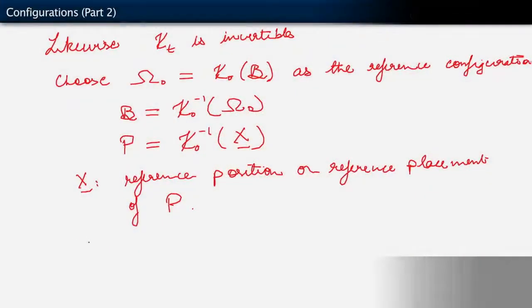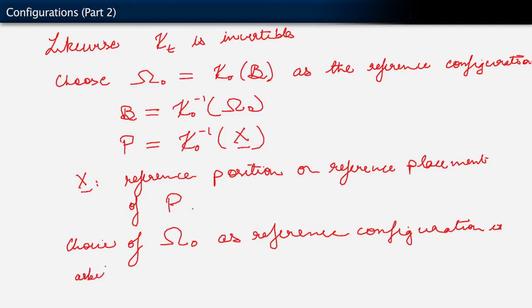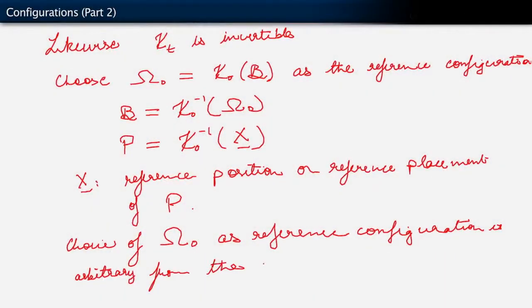Observe that our choice of the reference configuration is essentially arbitrary. We choose one of them to be the reference configuration. It's arbitrary from the mathematical point of view in the sense of these mappings. We just chose one of those mappings to be our reference configuration. So this configuration is arbitrary from the mathematical point of view.